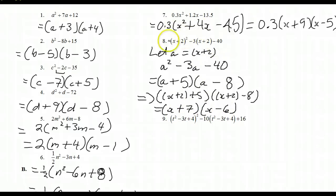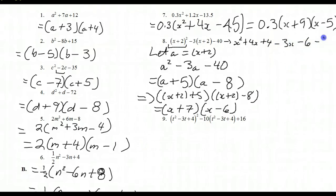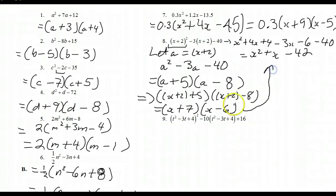You can verify by expanding. The original expression has x plus 2 squared, which is x squared plus 4x plus 4 — remember, squaring a binomial gives three terms: square the first, double the product of first and second, square the last. Then minus 3x minus 6, minus 40. Collecting: x squared plus 1x, and 4 minus 6 minus 40 is minus 42. Expanding the factored form: x squared minus 6x plus 7x gives plus 1x minus 42. These are equal, confirming our factorization.